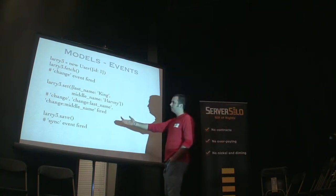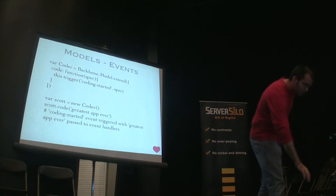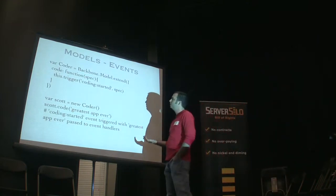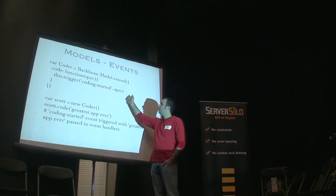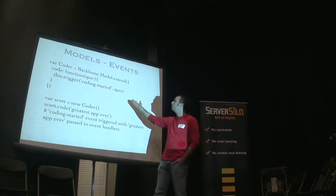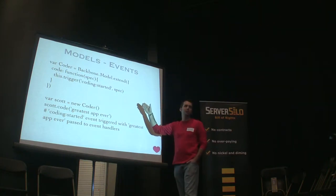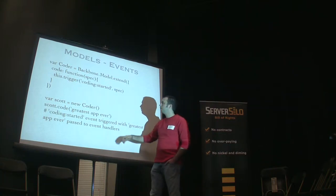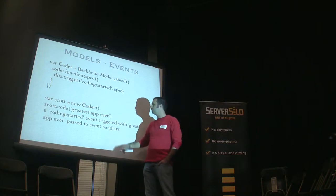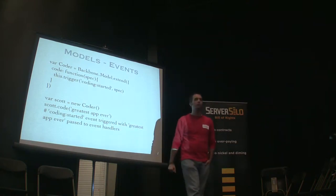When I save, there's a sync event that gets fired. You can also have custom events — we make a lot of use of this. In this case, I've created a model with a function called code. When I call that, I trigger an event saying 'coding has started' and provide some information along with that event. So any event handlers listening to that can get that extra information and change their behavior. I created a coder called Scott, told him to code the greatest app ever, and a coding_started event gets triggered — the event handler will get 'the greatest app ever' as the first argument.